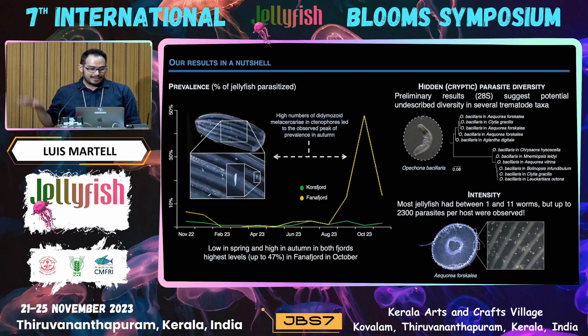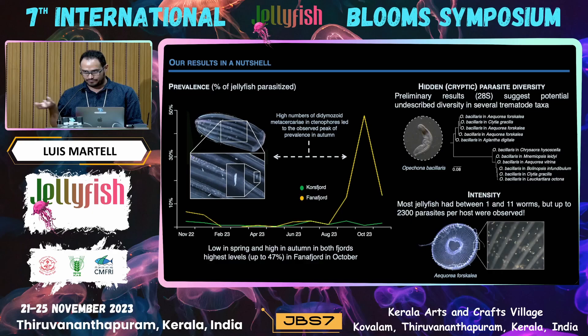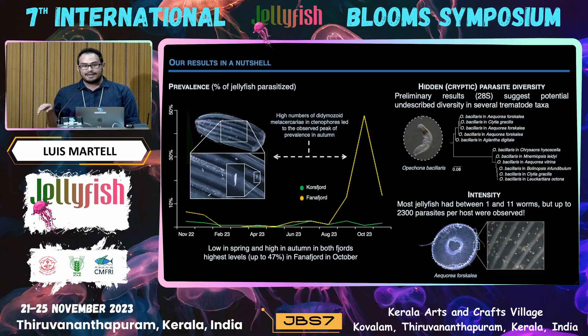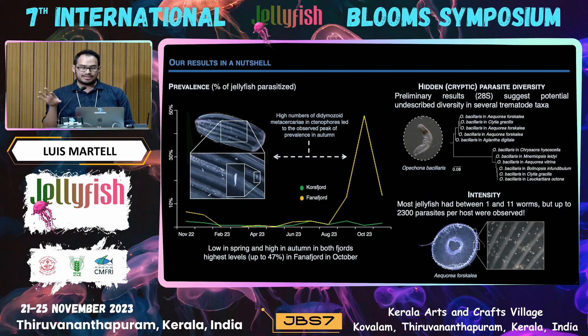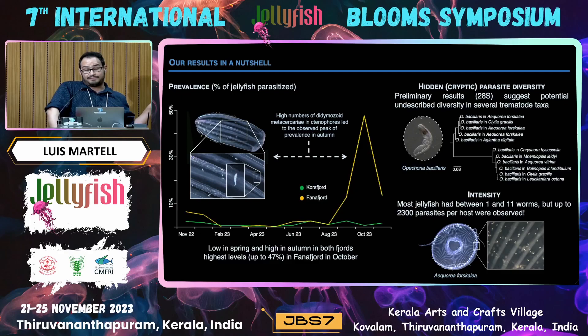In a nutshell, the prevalence — the percentage of jellyfish that were parasitized — was low in spring and high in autumn in both fjords, with a huge peak in autumn for Fanafjorden. We have slightly higher prevalence levels than most published studies. Generally prevalence is under five percent, but in Fanafjorden it reaches almost 50 percent. This peak is mainly due to the ctenophore component of the gelatinous plankton — almost half of them were heavily parasitized with didymozoids, a kind of fluke.